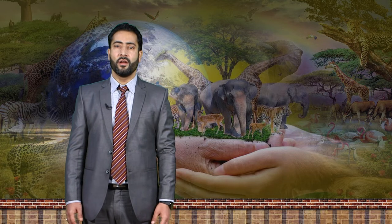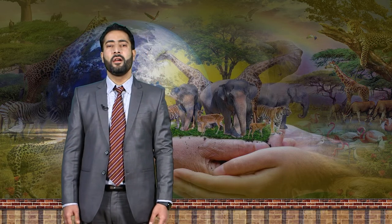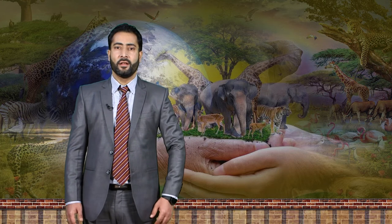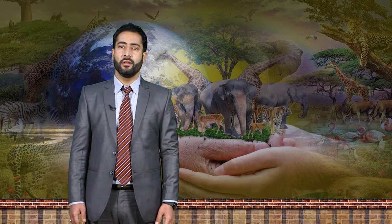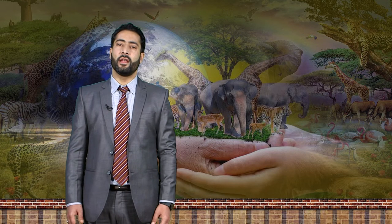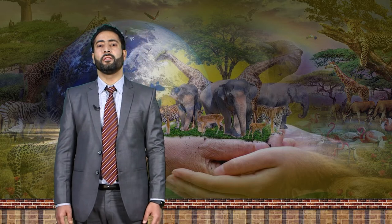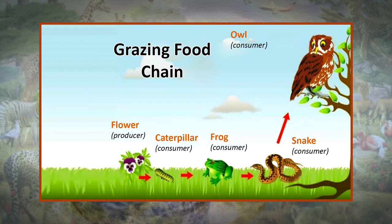In a community which has producers, consumers, and decomposers, energy flows in a specific pathway. Energy is not created or destroyed, but it flows from one level to another through different organisms. There are two basic types of food chains. Number one, the consumer food chain, which includes the sequence of energy flow from producer to herbivore to carnivore to reducer.